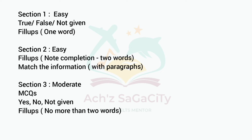Regarding the general module reading: in Section 1 you can expect two short passages at an easy level — True/False/Not Given type of questions in the first set and fill-up type of questions with one word only in the second set. In Section 2 you can expect two sets of passages, with question categories including fill-up type — note completion up to two words — and matching type of questions, mostly in the form of list of headings.